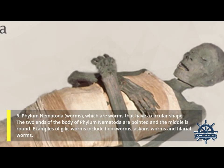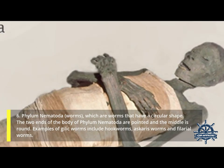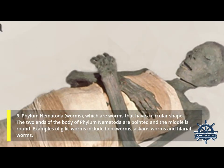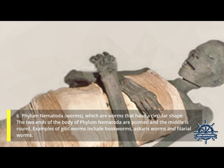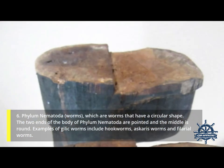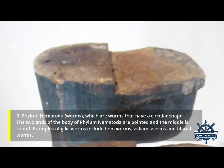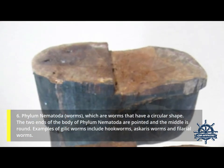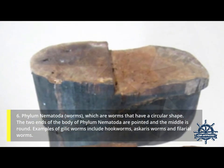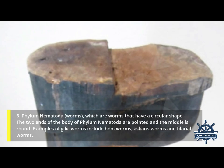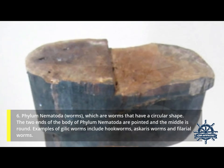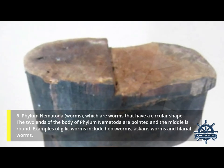Sixth, Phylum Nematoda — worms that have a circular shape. The two ends of the body of Nematoda are pointed and the middle is round. Examples include hookworms, Ascaris worms, and filarial worms.